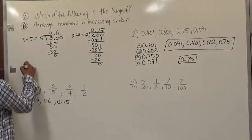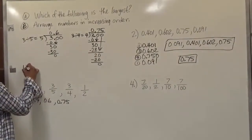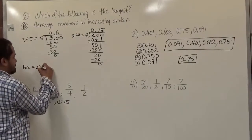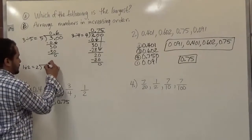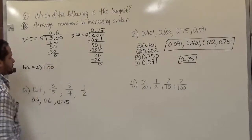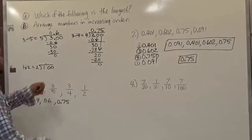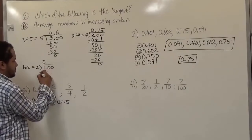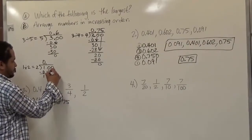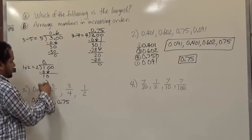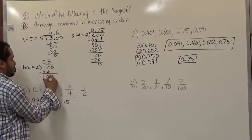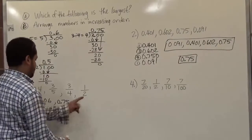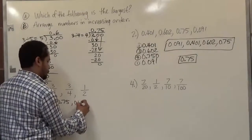Now let's work with the final division, which is 1 half. It's 1 divided by 2. We add two decimal places. 2 doesn't divide the 1, that gives us 0. Subtract, bring down the next term, we have a 10. Now 2 goes into 10 exactly 5 times with no remainder. So 1 half equals 0.5.